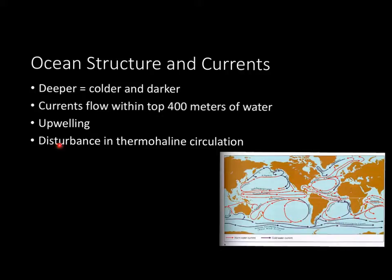Now let's take a look at the disturbance in thermohaline circulation. Basically, thermohaline circulation is the normal ocean flow — warm water moves along the surface, while cold, salty, dense water flows below the surface.